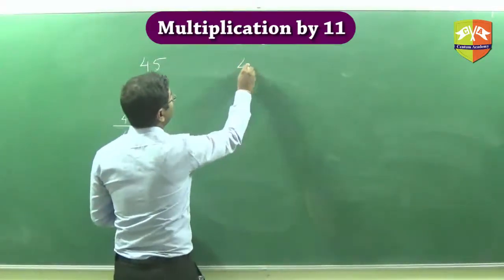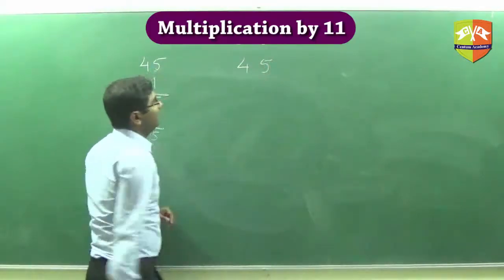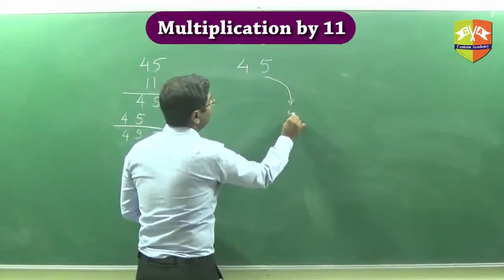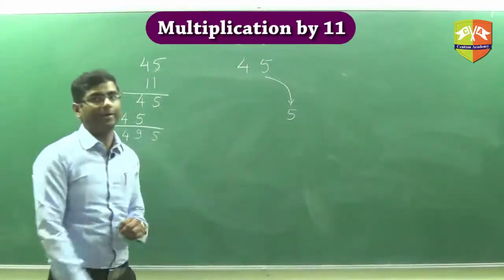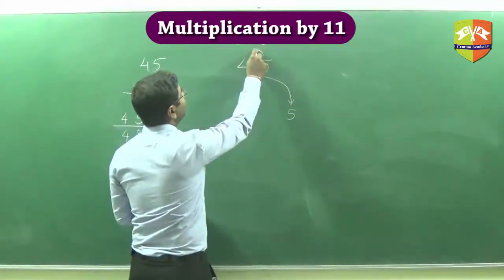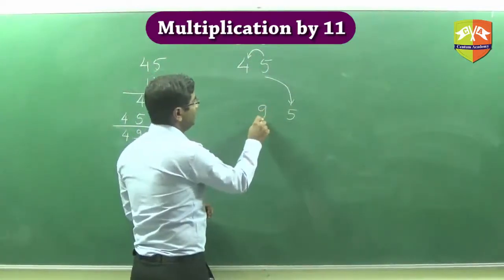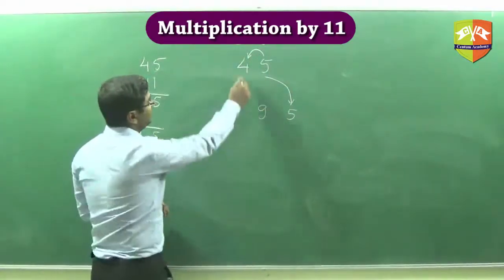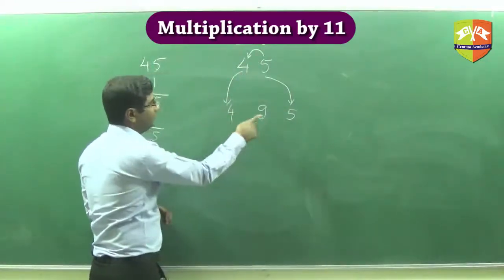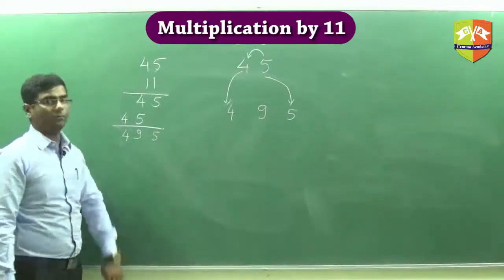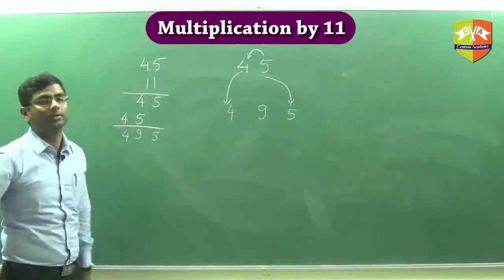The same multiplication can be done with a new technique or alternative method which you can do mentally with a little bit of practice. Let's say I have the same number 45. You simply write this number down 5, this digit 5. Then what you do is add these 2, so we get 9. You write 9 over here and then simply take this here it becomes 4. The product we got here is 4, 9, 5 and this is 4, 9, 5 again. Both of them are same.